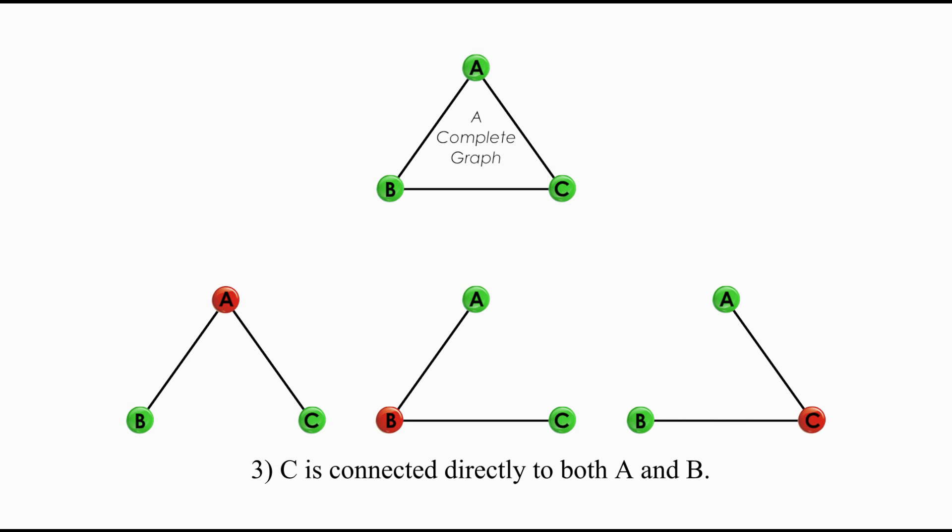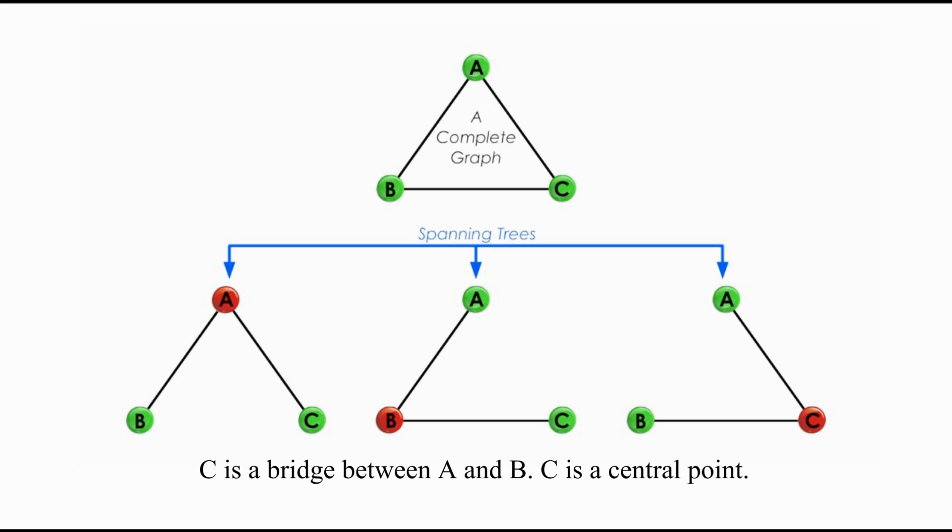3. C is connected directly to both A and B, and C is a bridge between A and B, and C is a central point. All three points are connected, and no loop is formed.